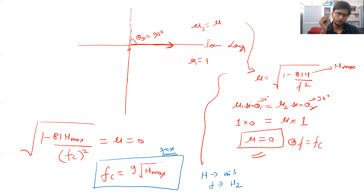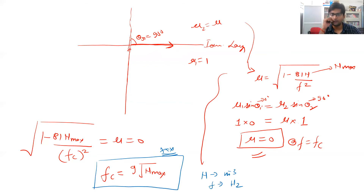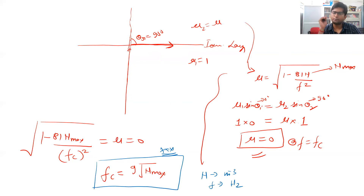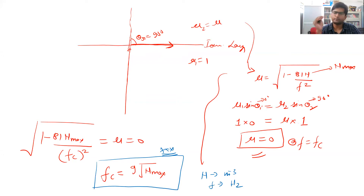The critical frequency of a sky wave for any particular ionic layer depends only on the charge concentration or ionic concentration in that particular layer.